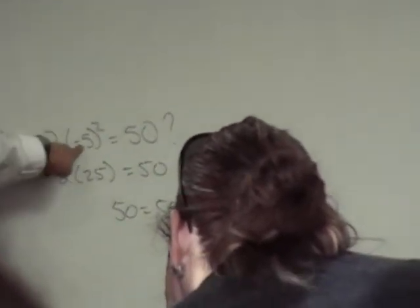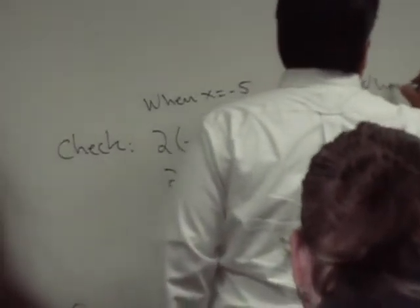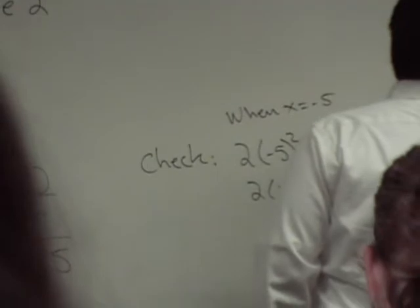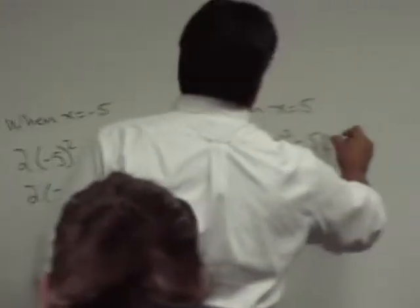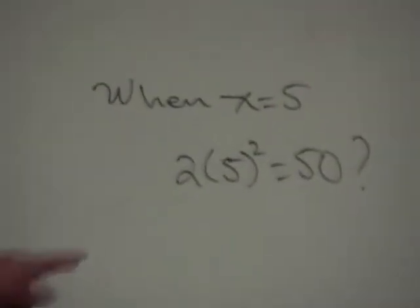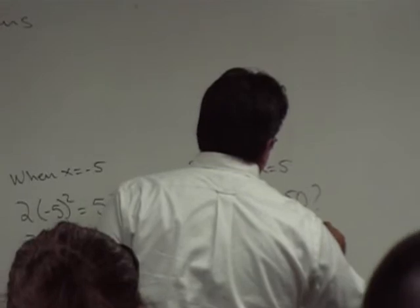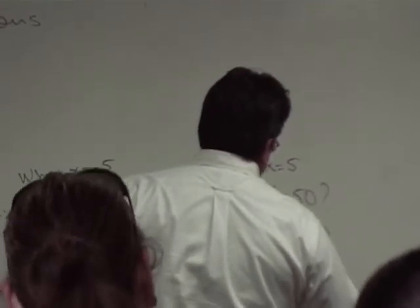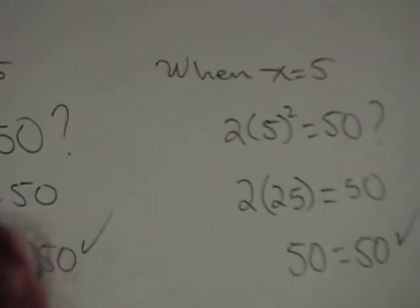What's going to happen when I replace this negative 5 with a positive 5? So, I should have written here when x equals negative 5. This is what we get. Now, when x equals 5, we get 2 times 5 squared equals 50. Is this true? Well, you can see that it works because 5 to the second power is also 25. And you get this true statement.